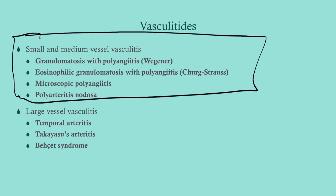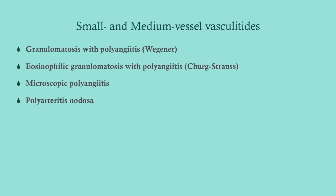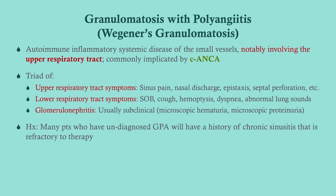First is GPA — formerly called Wegener's — now called granulomatosis with polyangiitis. The thing that makes GPA stand out is that it has a strong predilection for the upper respiratory tract. Look for a history of repeated sinus infections and chronic sinusitis, because inflammation disturbs the integrity of the tissue, making infection more likely. Also look for sinus pain, stuffy nose, nasal discharge, and nosebleeds.